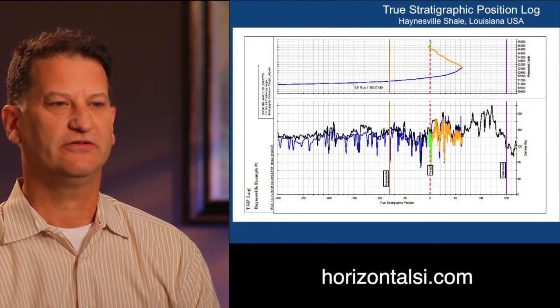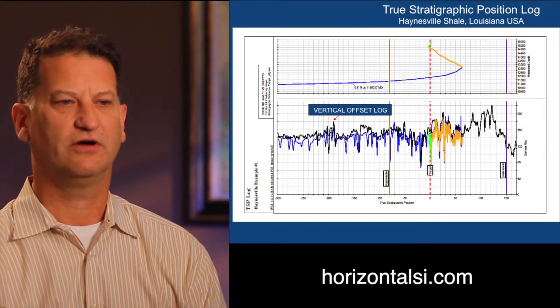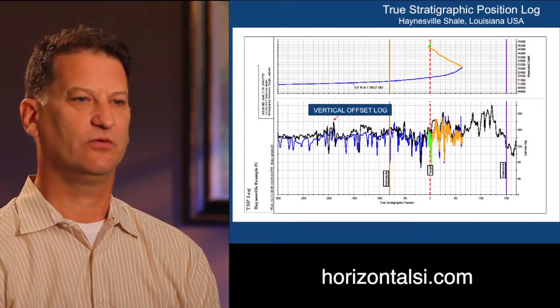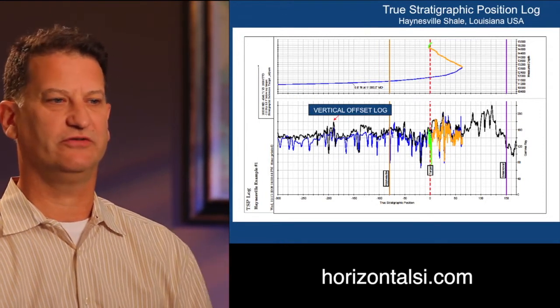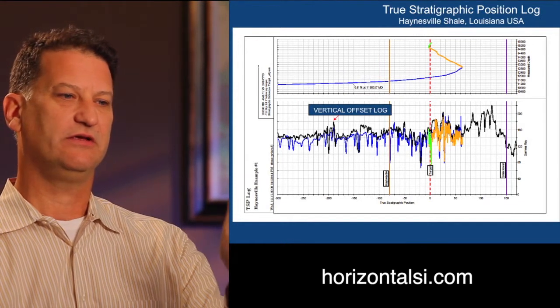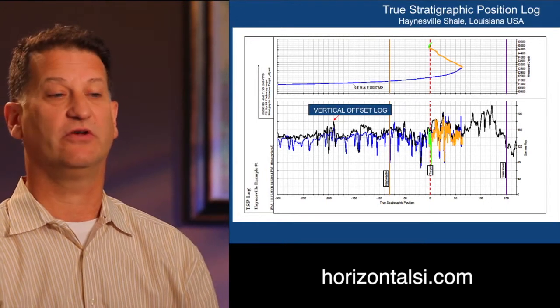Here's an example of a TSP plot. The black curve on this is the vertical offset well, so what we're looking at is a well of vertical section, looking at vertical stratigraphic sections. The top of the section is on the left, the bottom of the section is on the right.